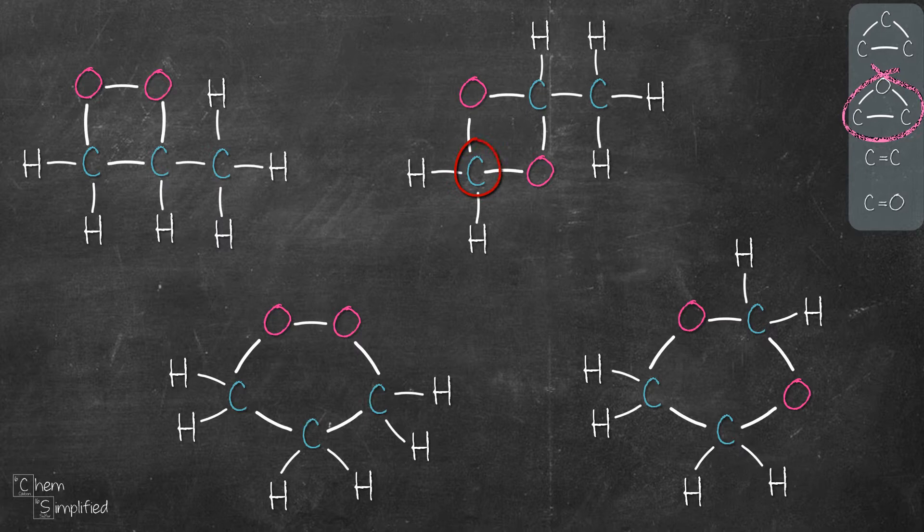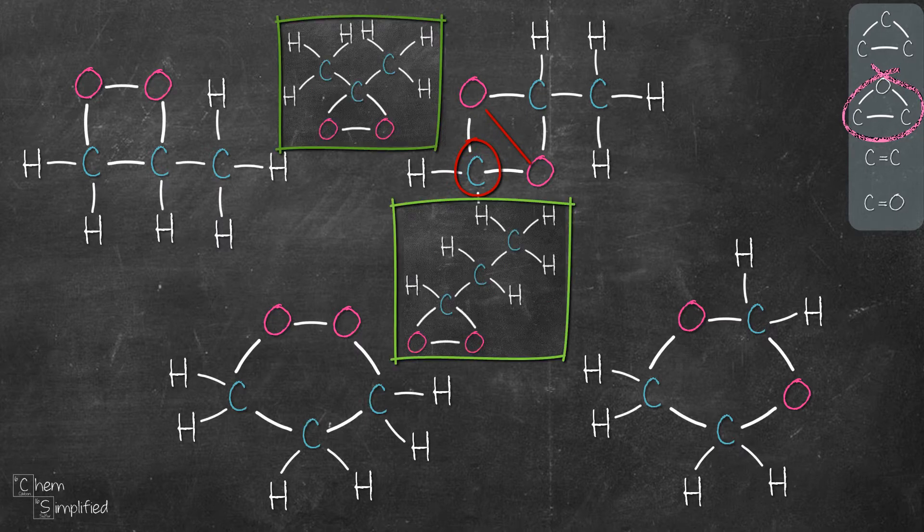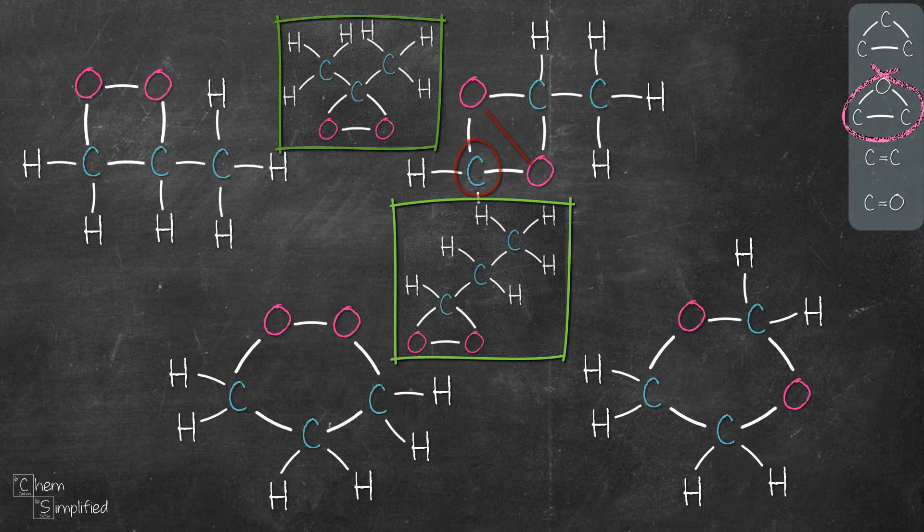Now if we remove one more carbon and shrink it to three member, in fact that will be the isomer that we've already drawn up. Looks like we're done with rings.